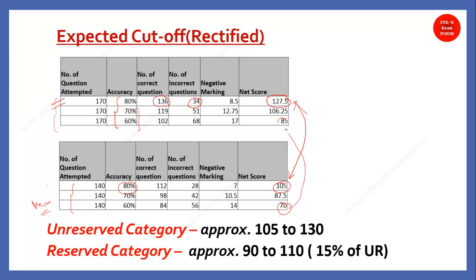There is a disclaimer that this is not the overall final cutoff. There will be certain other factors: zone matters, number of vacancies matters, and your reservation also matters. These are the three criteria that will decide this cutoff. This is based on the candidate feedback we got. So for unreserved category it is 105 to 130 — previously it was very high because we had not excluded incorrect questions. For reserved category, standard says 15% relaxation, so 90 to 110 they can expect.